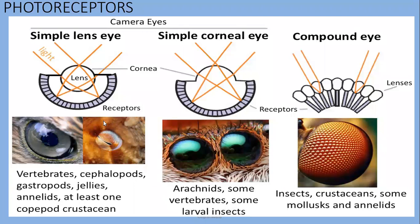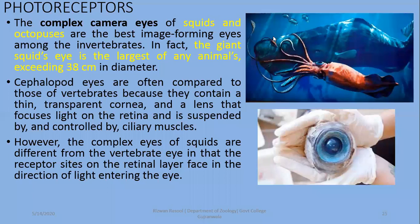This slide shows a comparison of eye types. The first is the simple lens eye found in vertebrates and cephalopods such as octopus, and also in gastropods, jellyfishes, annelids, and at least one crustacean. The second is the simple corneal eye observed in arachnids, some vertebrates, and some larval insects. The third is the compound eye with multiple lenses from multiple sides, observed in insects and crustaceans, some molluscs, and annelids.